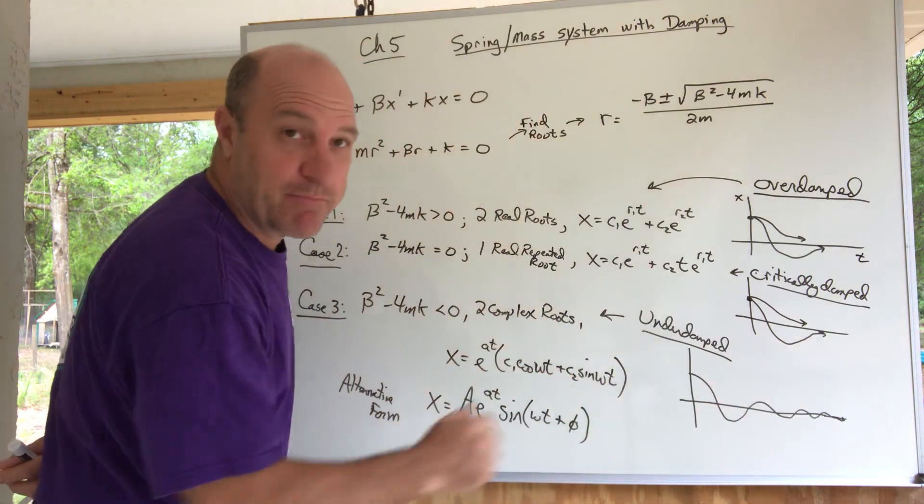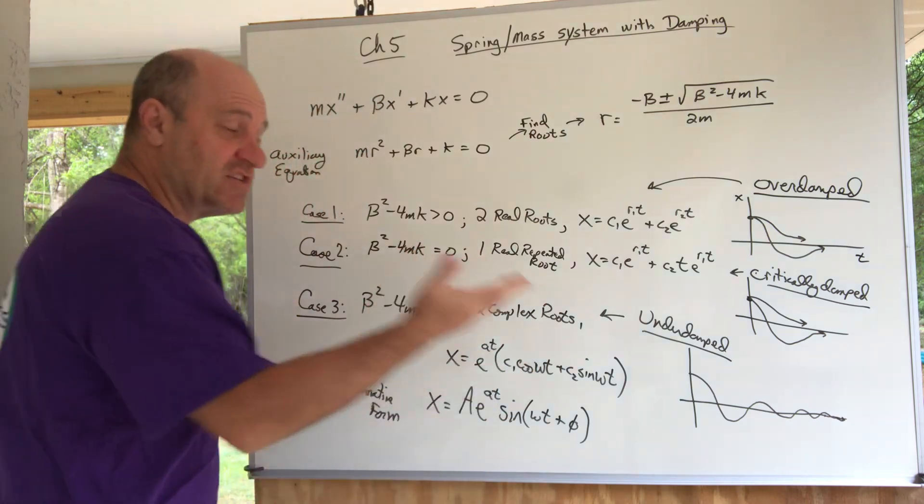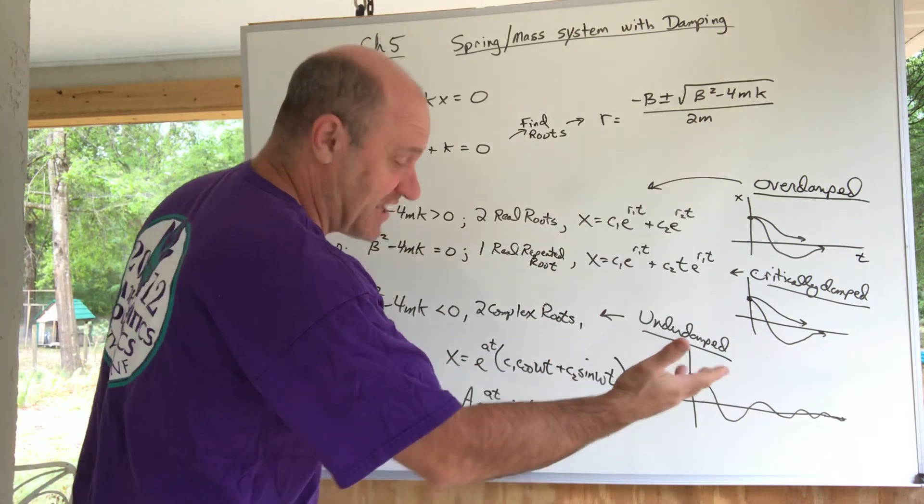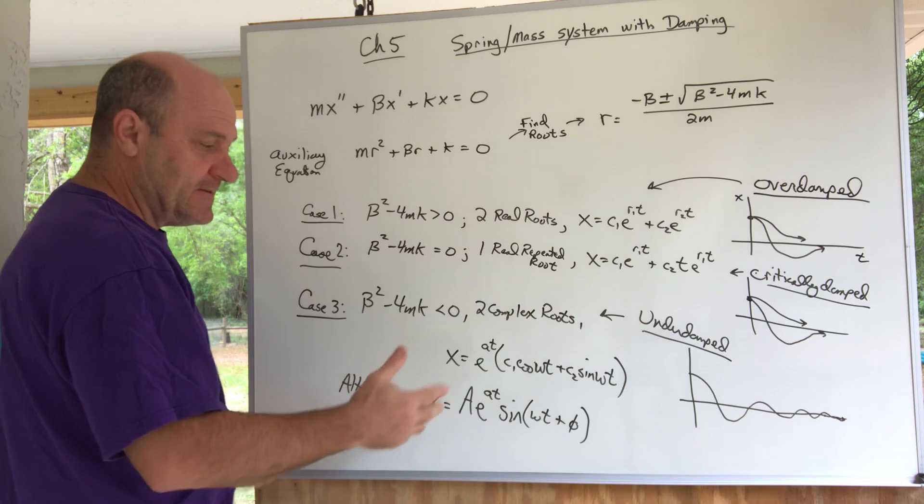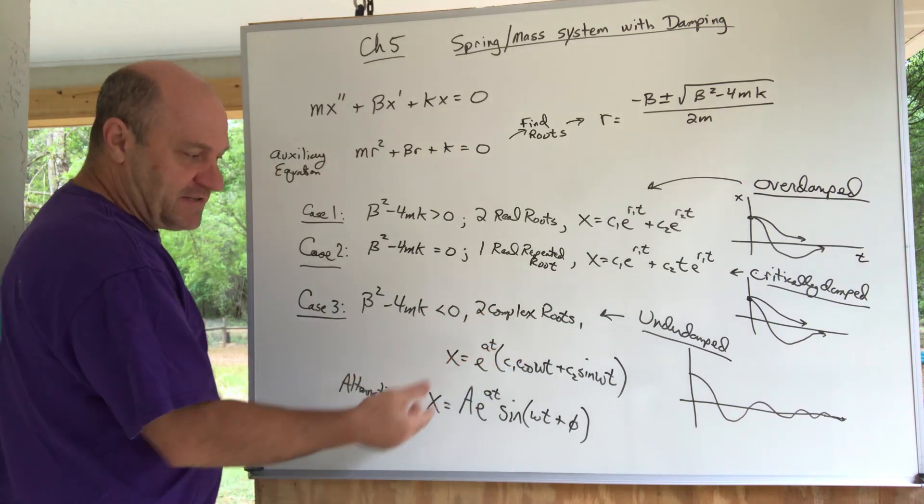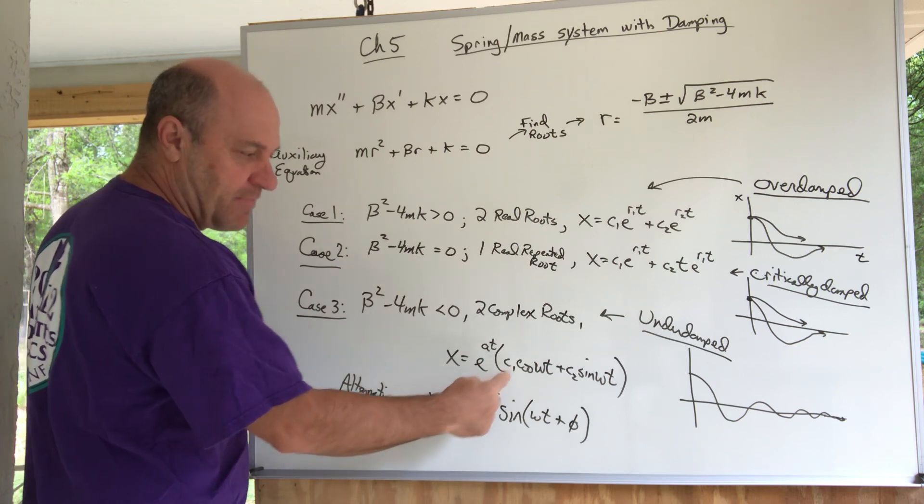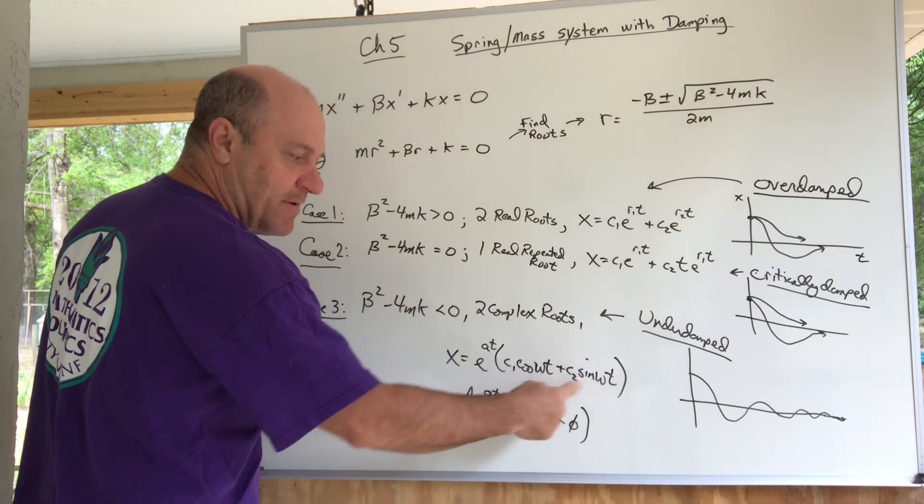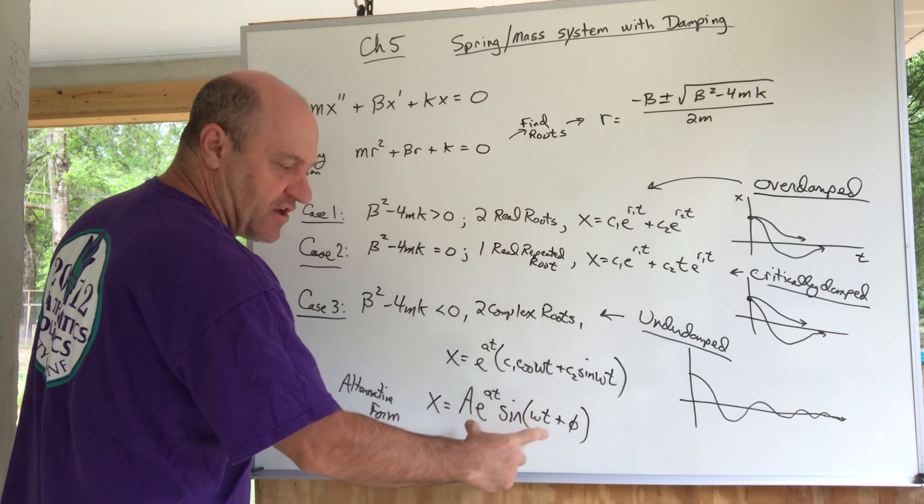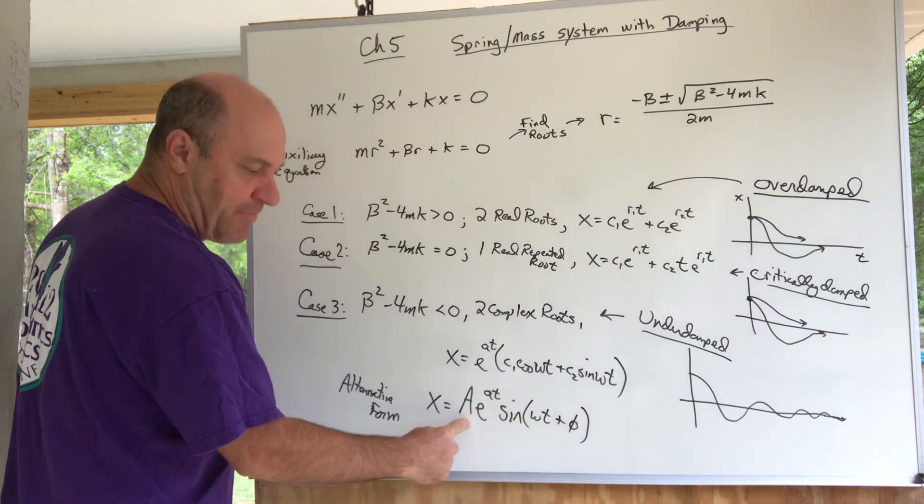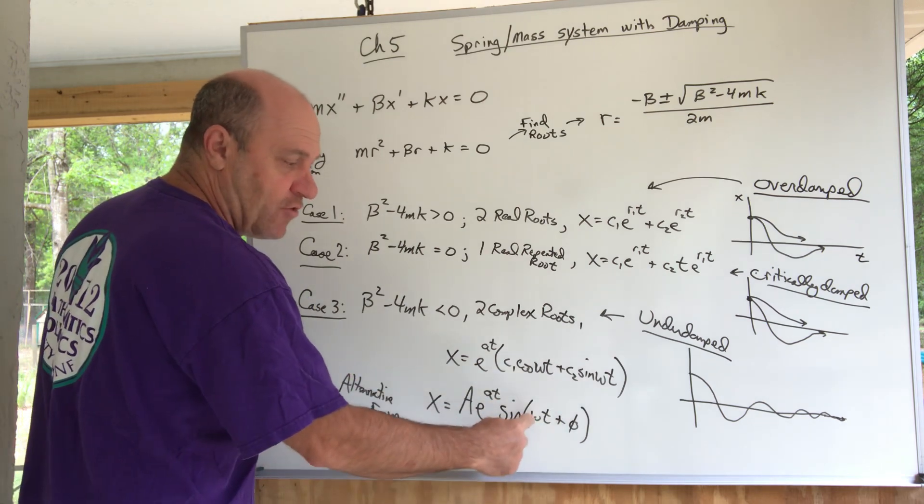In fact, it's an exponentially diminishing amplitude. There's an alternative form for this. The e to the at is going to sit out here in front, but this sine and cosine, this sum of sine and cosine, can be turned into the alternative form: capital A, the amplitude, sine omega t plus phi, the phase angle or phase shift.